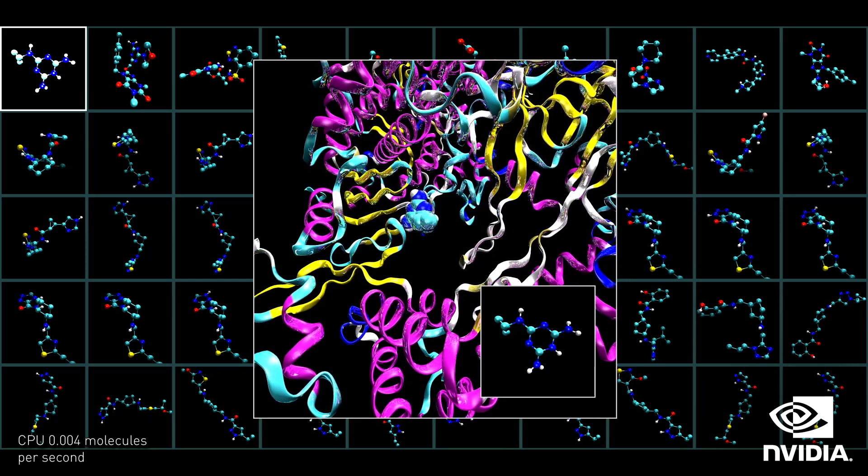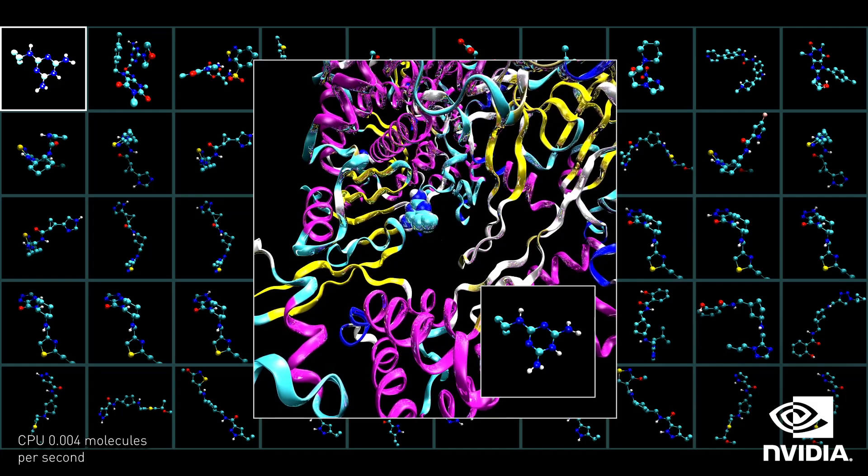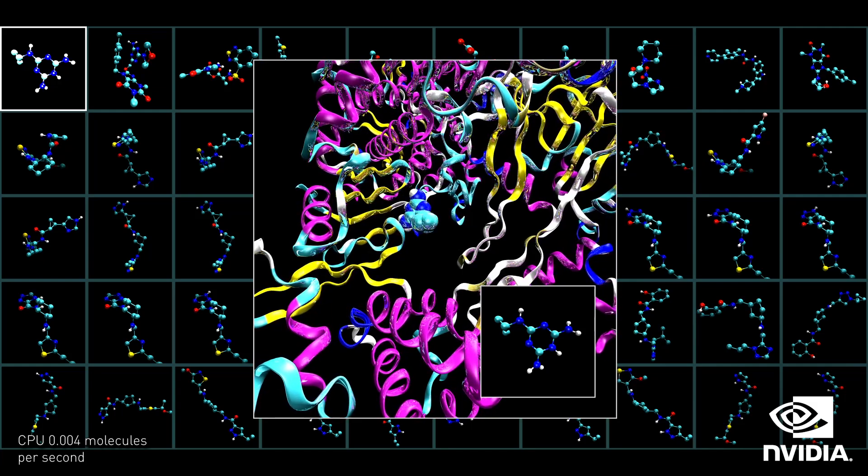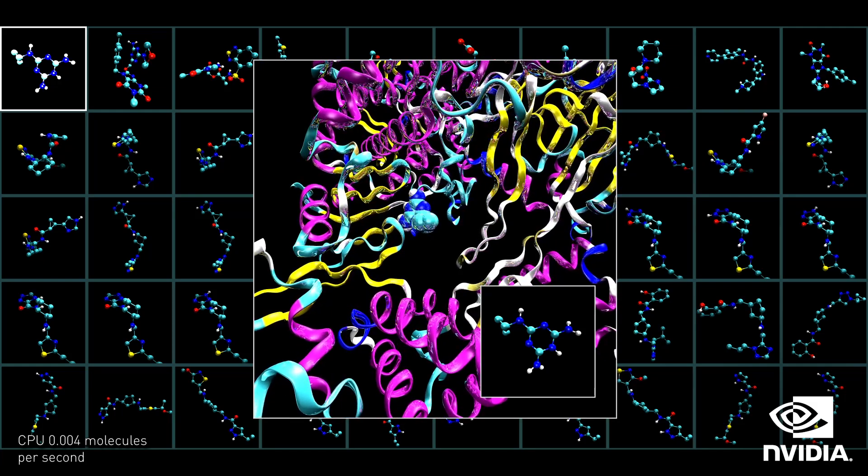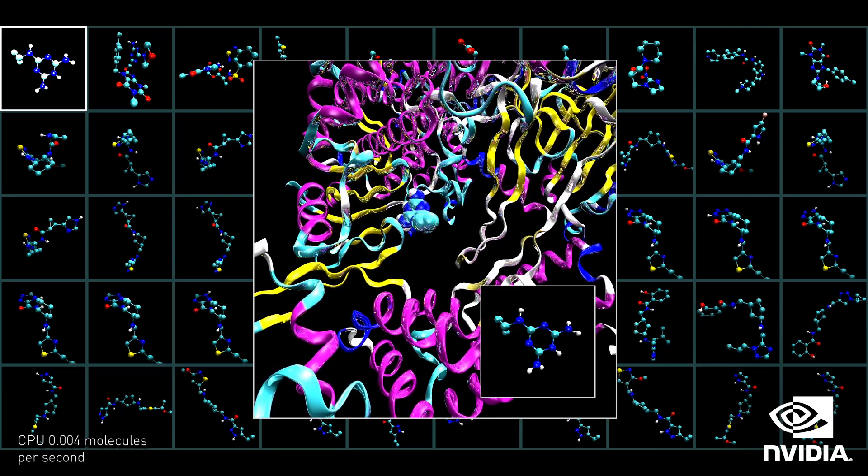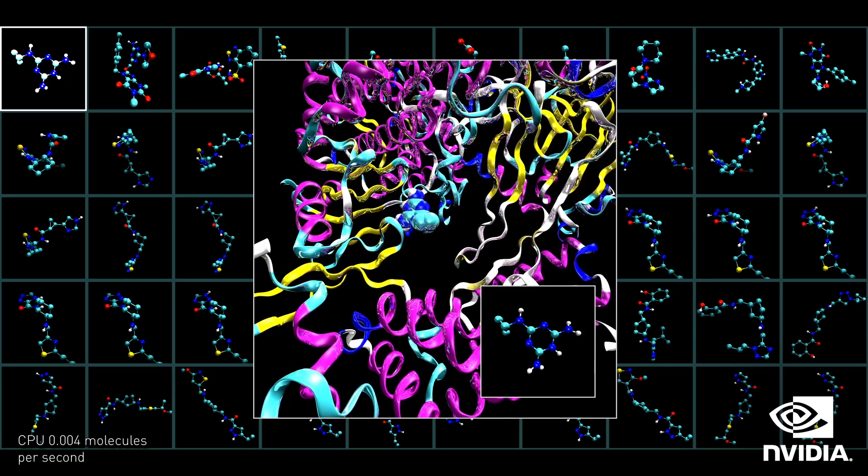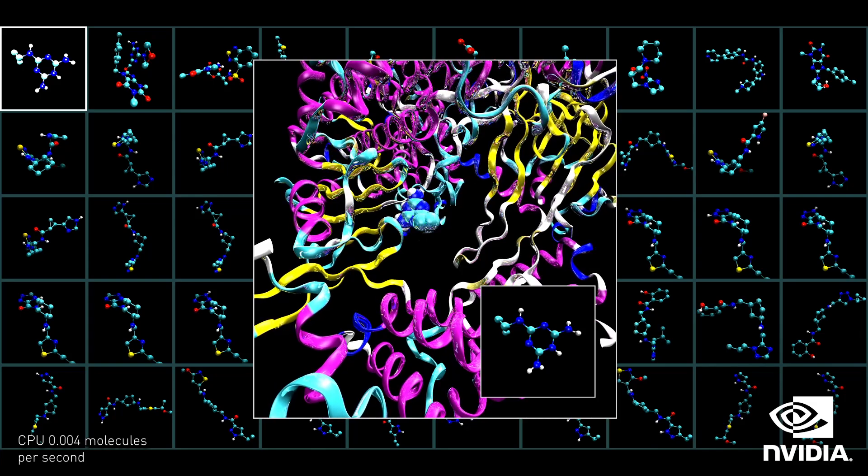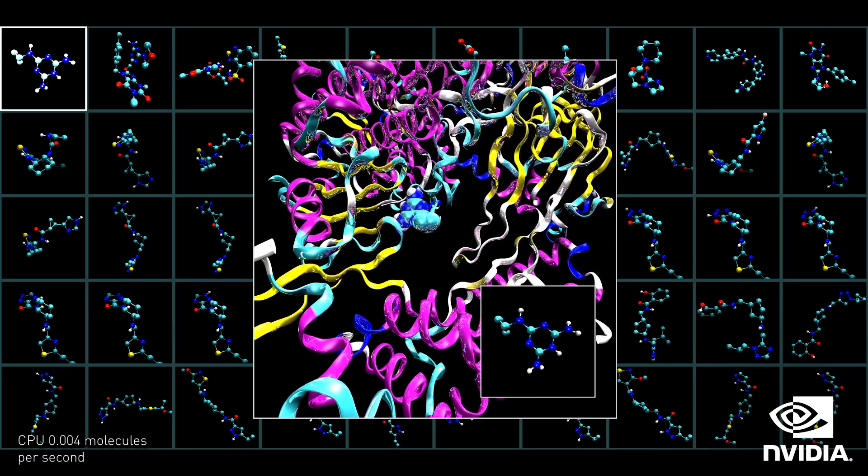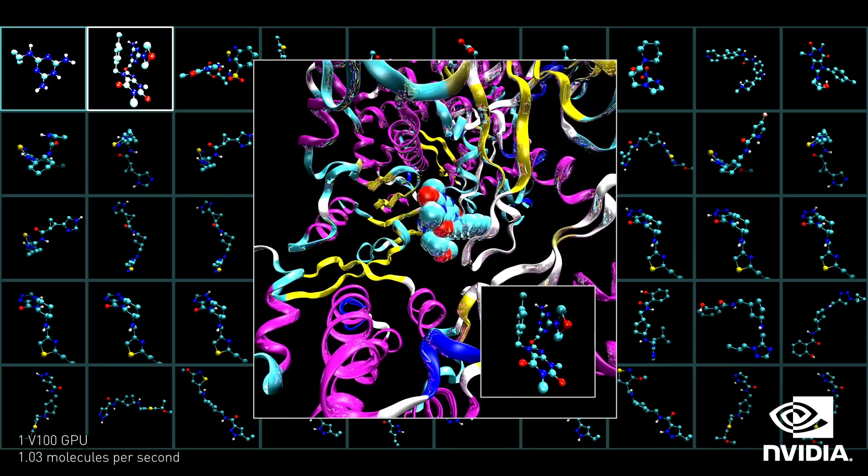Here's a visual representation of screening a database of compounds. When using a CPU, evaluating millions of poses for billions of molecules would take even a supercomputer years. On a single GPU, this can be done more than 230 times faster than on a single CPU thread.